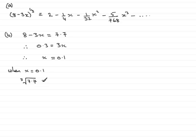And it's going to be equal to 2 minus a quarter times the x value, which is now 0.1. I've got that in there, minus 1 over 32 multiplied by 0.1 squared.